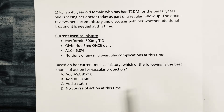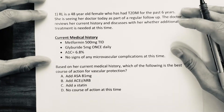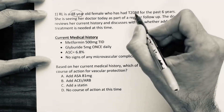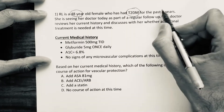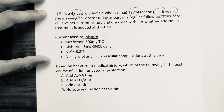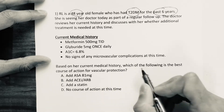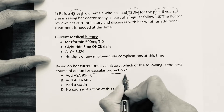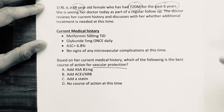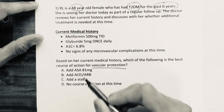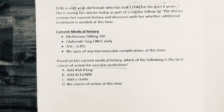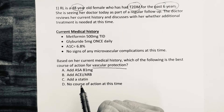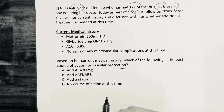Let's circle the key points from this question: 48-year-old type 2 diabetic, diagnosed six years ago. Based on her current medical history, which of the following is the best course of action for vascular protection? The four choices are: adding aspirin 81 mg, adding an ACE inhibitor or ARB, adding a statin, or no course of action at this time.